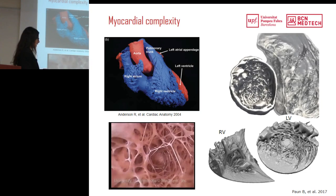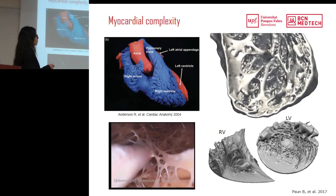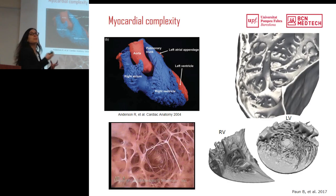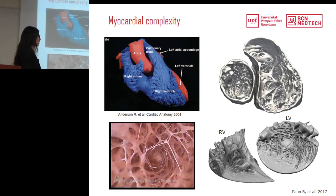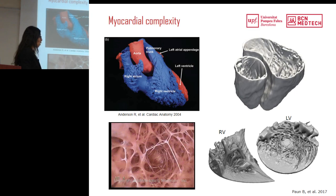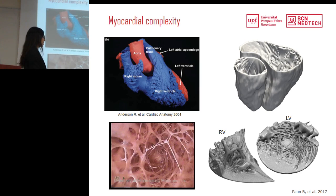We have a PhD student at UPF called Bruno Pound. In this video you can see his segmentation of the inner myocardial structure — you can see the real complexity. We need a way to compare this complexity between subjects. One approach is using parametrization: we can map the 3D structure into a common 3D domain — for example, the left ventricle can be mapped to a disk, and the right ventricle to a semilunar shape. This allows us to compare and study the variability of this internal complexity.